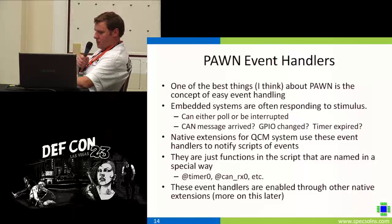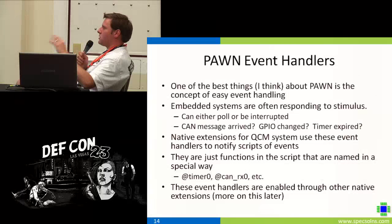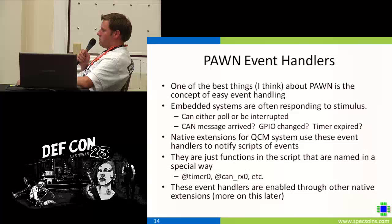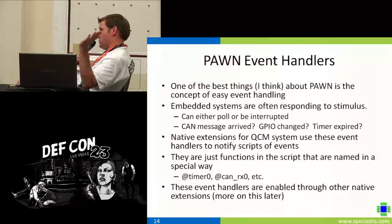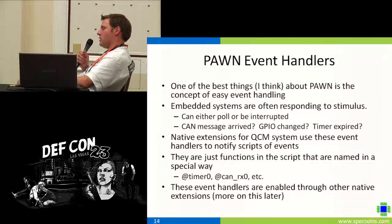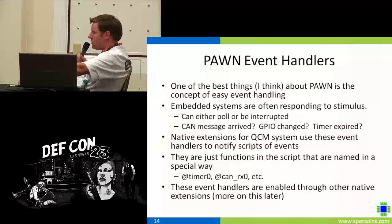I really like how Pawn handles the concept of event handling. When you look at an embedded system, you have interrupt handlers — the application is always responding to stimulus. The user pressed a button, a message received, something changed, a timer expired, et cetera. Traditionally you could either poll for them or set up interrupt handlers with all this logic. The nice thing about Pawn is it has a built-in concept of event handlers, things that will seemingly be called asynchronously when these types of events occur. They look a lot like functions, but they just have a special name.